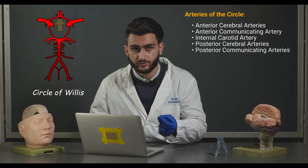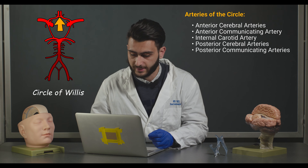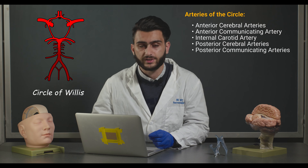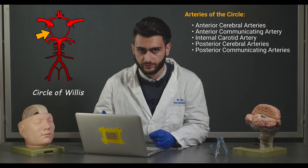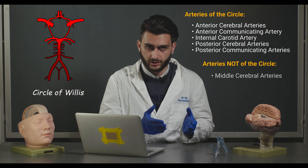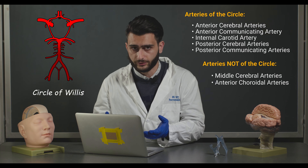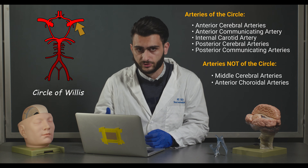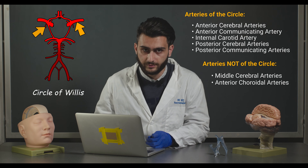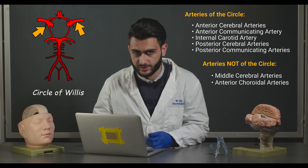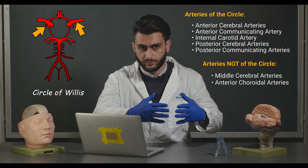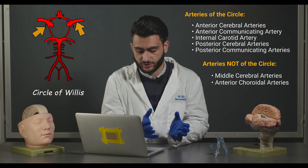We have the anterior communicating artery which connects the two anterior cerebral arteries, and we also have the posterior communicating arteries. There are also portions of the cerebral vasculature which aren't part of the Circle of Willis but are important: one being the middle cerebral artery and another is the anterior choroidal artery. They may seem like they are part of the Circle of Willis, but by definition are not considered among the five pieces that make it up.